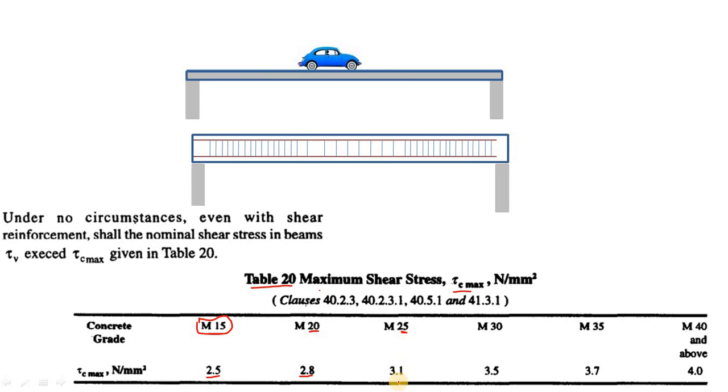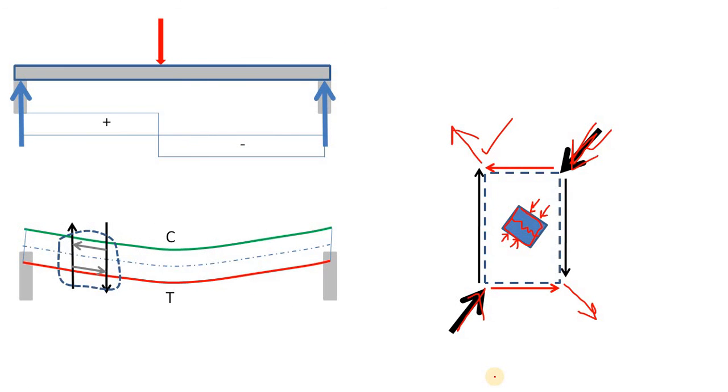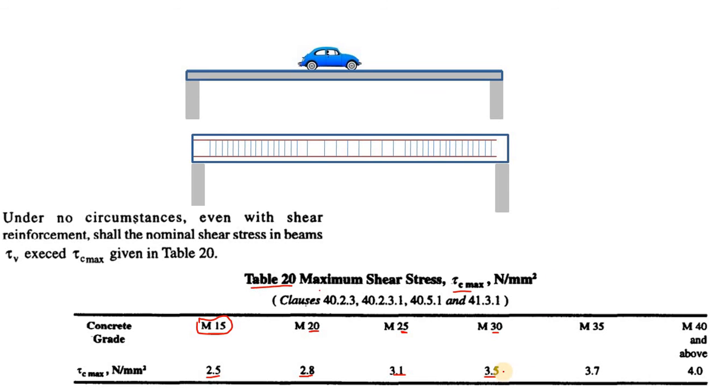For M25, this is 3.1 but for M30, this is 3.5. Okay. So, now you have got your answer. Why there is a limitation in Tau C max based on the grade of concrete? Because this resultant compressive force will crush your concrete if you allow more Tau C max than this recommended value.